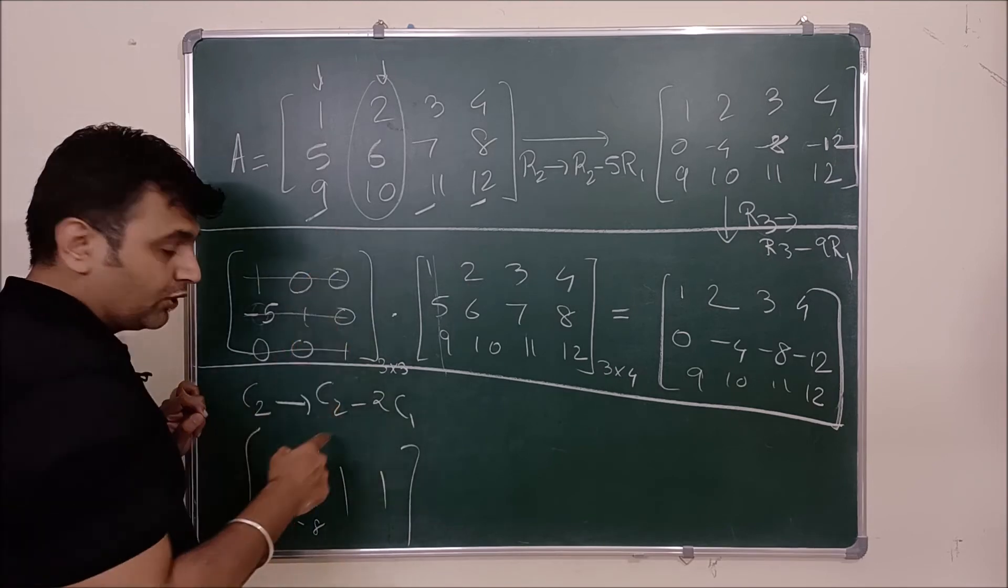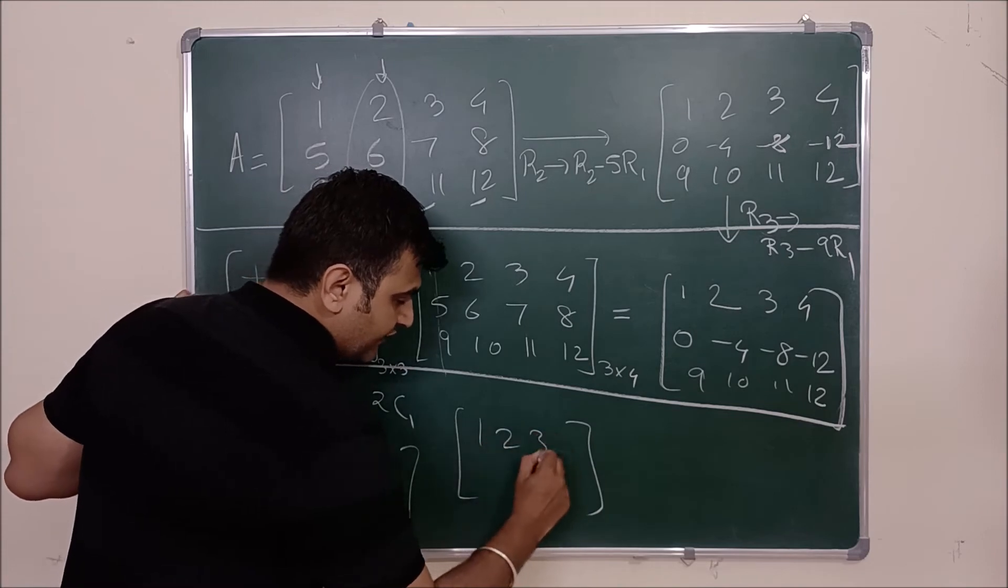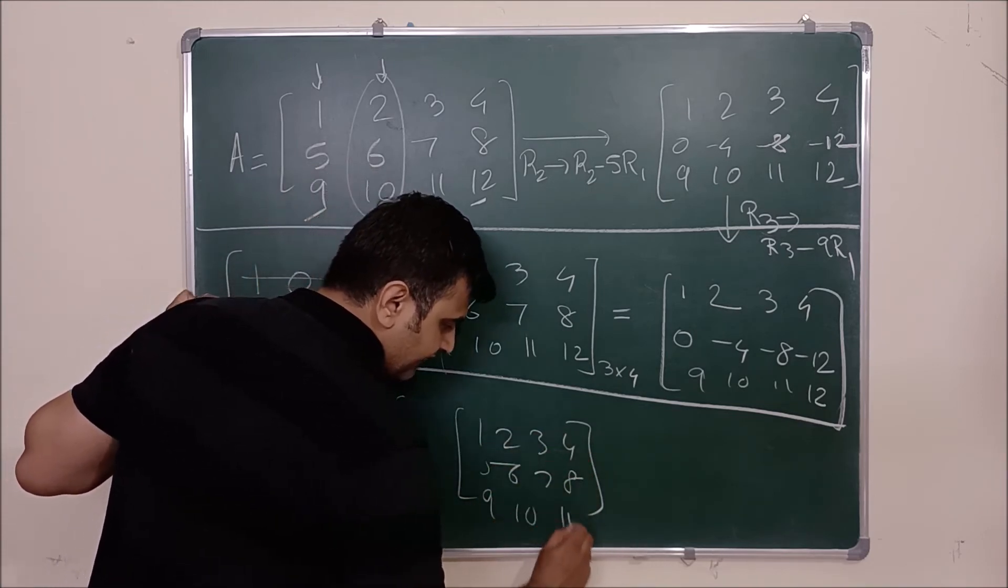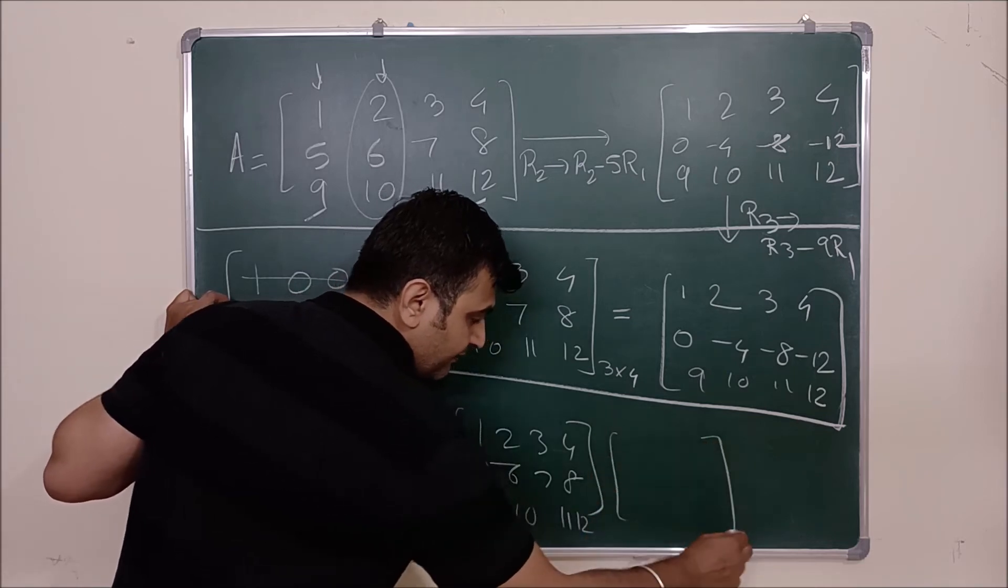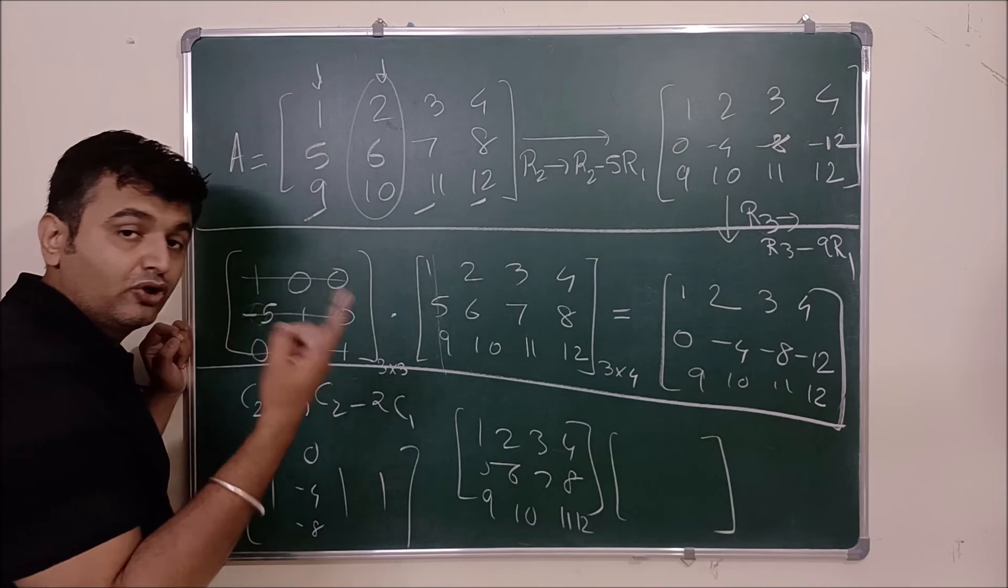Now doing column operation is same as you post-multiply. So your matrix is 1 2 3 4, 5 6 7 8, 9 10 11 12. You post-multiply your matrix with a nice matrix. Now what will be the order of the matrix?